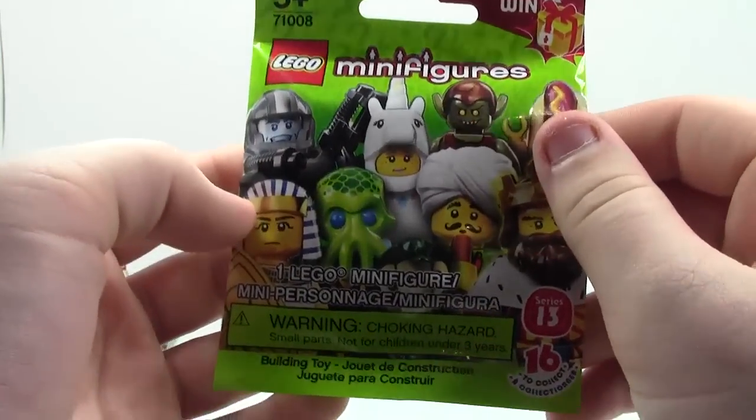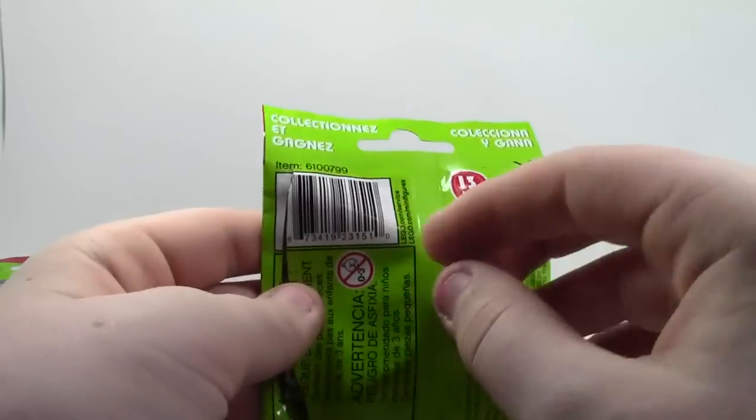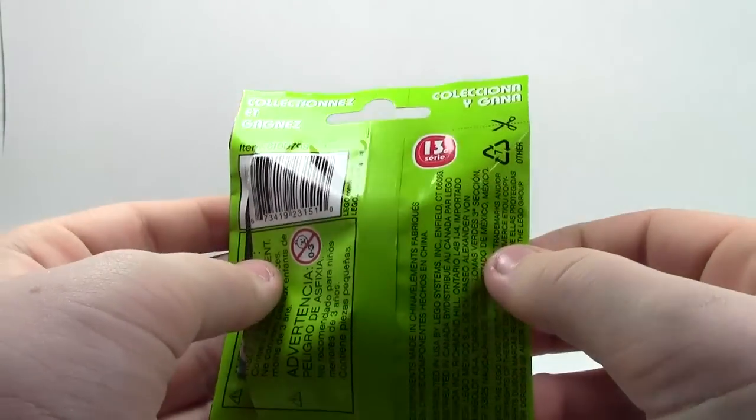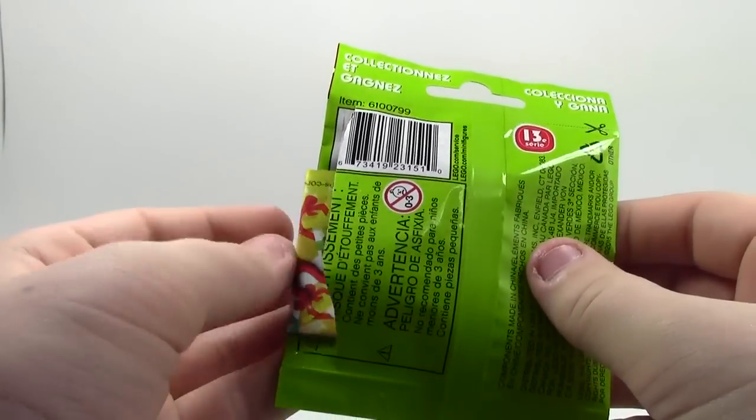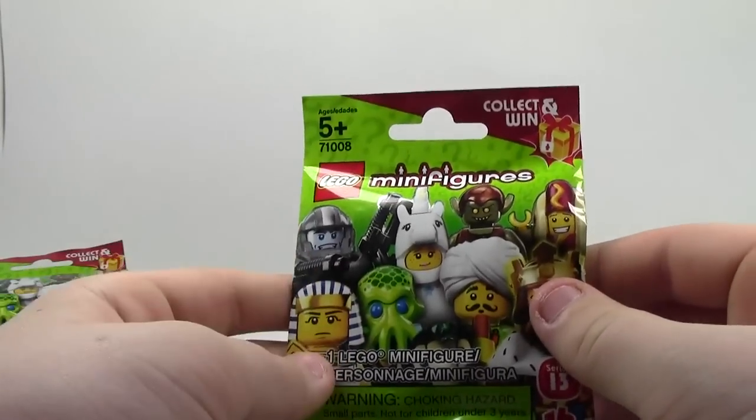Some of the best minifigures on the front. One minifigure, Series 13, 16 to collect. And then here on the back it says collect and win. With each figure I'm guessing you get like a code in this little sheet to win prizes. So that is pretty cool.